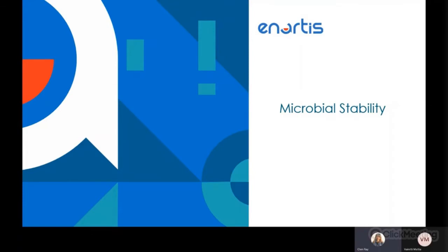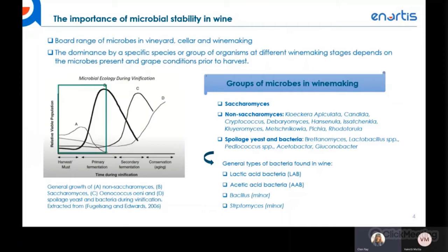First, we'll touch on microbial stability. Microbial stability plays a significant role in winemaking, as there is a wide range of microbes present in the vineyards, cellar, and throughout the winemaking process — but not all of them are desirable. The dominance of a specific species at different winemaking stages depends on microbes present as well as grape conditions prior to harvest. Microbes can be grouped into three categories: Saccharomyces cerevisiae, non-Saccharomyces, and spoilage yeasts and bacteria.